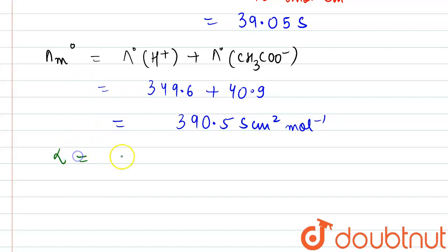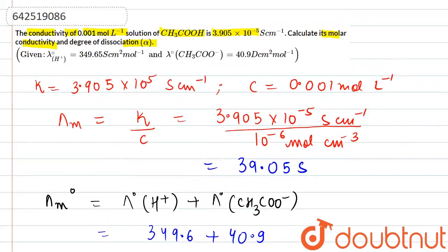We are supposed to calculate alpha. So, we will use the expression for infinite dilution and for the concentration C in the numerator. It becomes 39.05 divided by 390.5. From here, we get the value as 0.1. So, these are the respective values. Thank you.